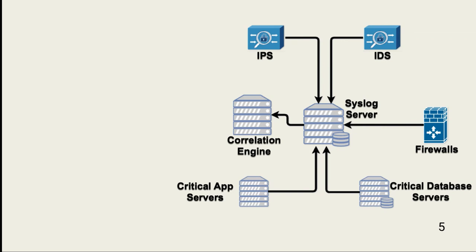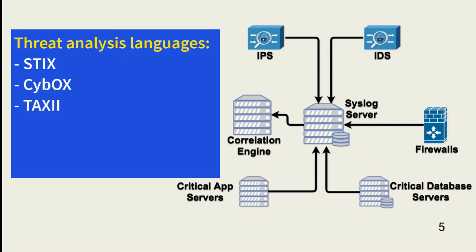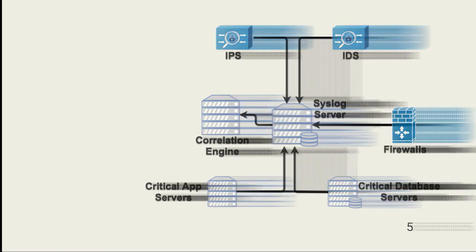Finally, the CISSP Common Body of Knowledge lists three main languages used for threat analysis: STIX, Structured Threat Information Expression; CybOX, Cyber Observable Expression; and TAXII, Trusted Automated Exchange of Indicator Information. Well, that's it for this lesson. If you have questions, please ask. And until next time, be careful what you click.